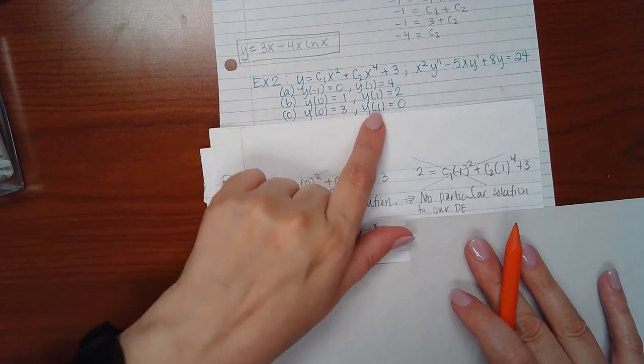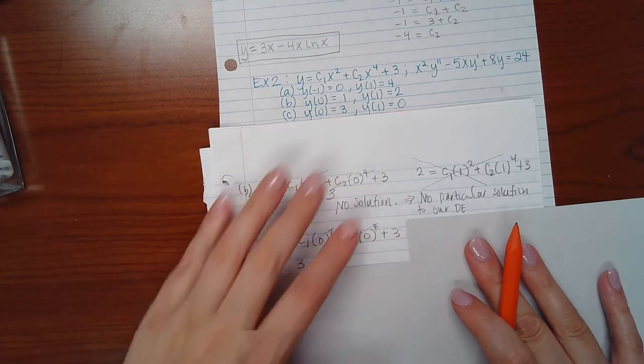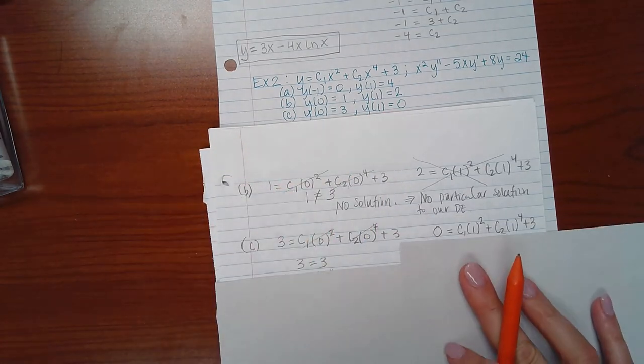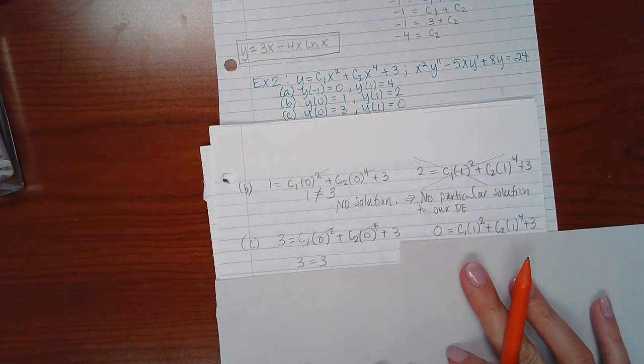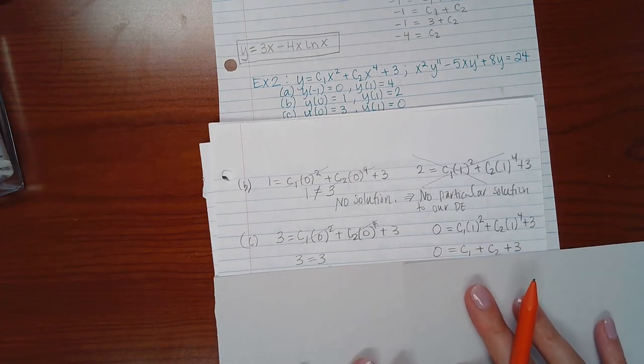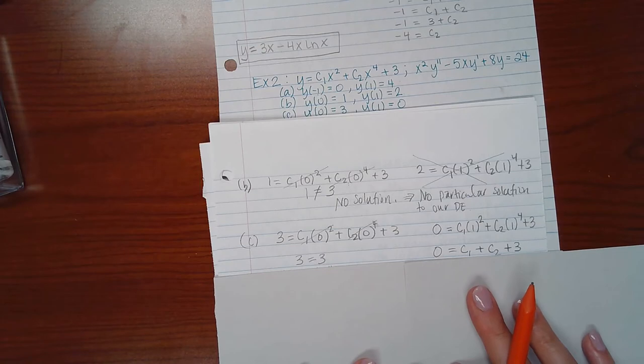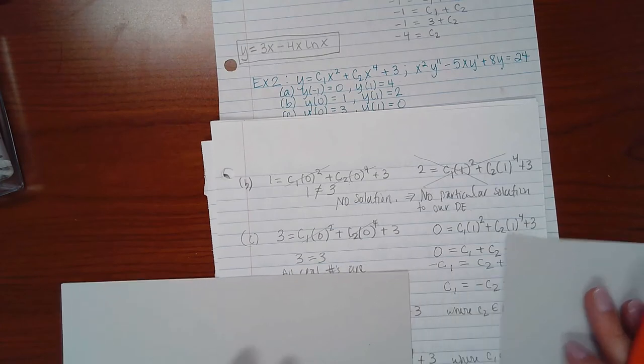So we use our second statement, that when X is 1, Y will equal 0. So Y is 0 and I plugged in 1 for the X's, which means I end up with this equation. 0 equals C1 plus C2 plus 3. Now I can solve for whichever variable I want to.